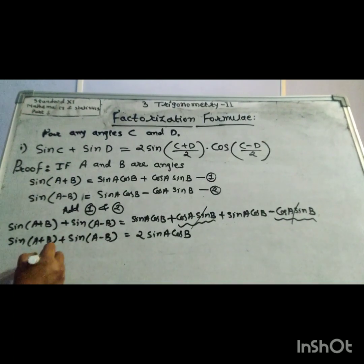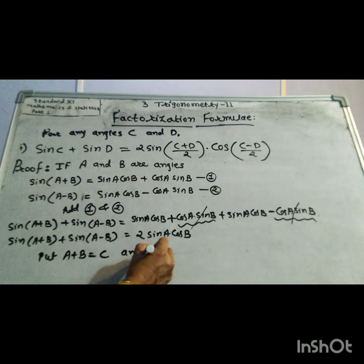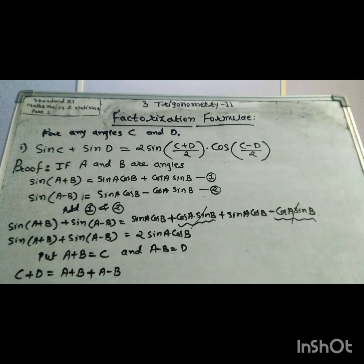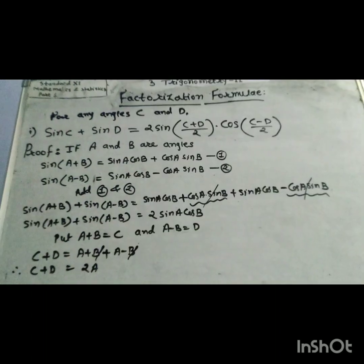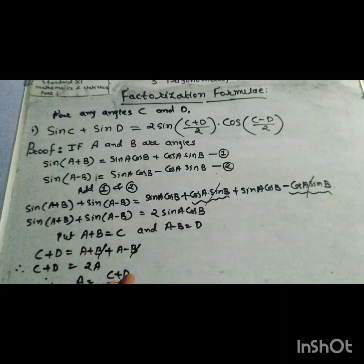Now put A plus B equal to C and A minus B equal to D. Adding: C plus D equal to A plus B plus A minus B. Plus B minus B equal to 0, so C plus D equal to 2A. Therefore A equal to C plus D divided by 2.